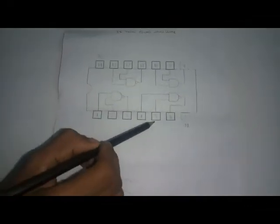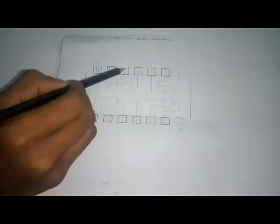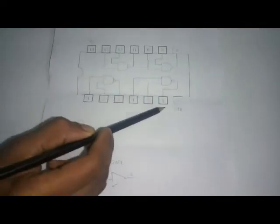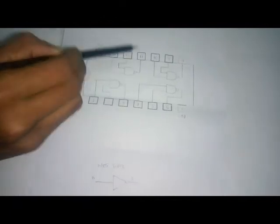This is the pin diagram of IC7400 Quad NAND gate. As with all ICs, this IC also has the 7th pin as ground and the 14th pin as VCC. The input pins for the NAND gates are 1 and 2, 4 and 5, 9 and 10, and 12 and 13 respectively. The output pins are 3, 6, 8, and 11 respectively.